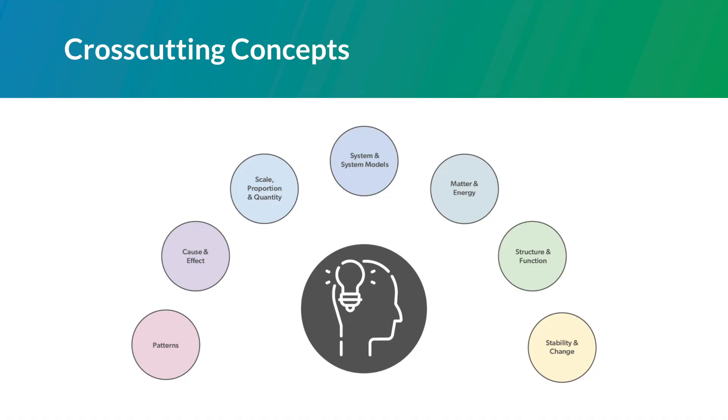The cross-cutting concepts are seven big ideas that are used in many science disciplines. These seven ideas are powerful because they explain phenomena throughout science and can be used to solve problems in engineering. The cross-cutting concepts are one of the three dimensions of the next generation science standards. They are thinking tools for doing science.